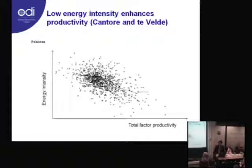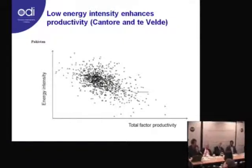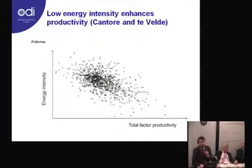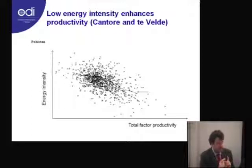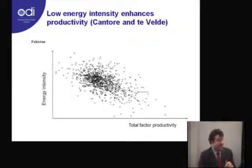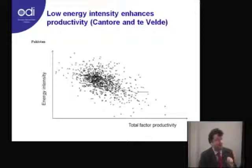Third contribution: we try to investigate the relationship between energy intensity and total factor productivity — not energy productivity, but total factor productivity, meaning the productivity from the use and combination of the whole set of inputs. As a first experiment, we try to see if total factor productivity — the capacity of firms to generate value added — is an important factor explaining lower energy intensity levels at firms, together with other factors such as firm characteristics like age of the firm, foreign ownership, and so on.